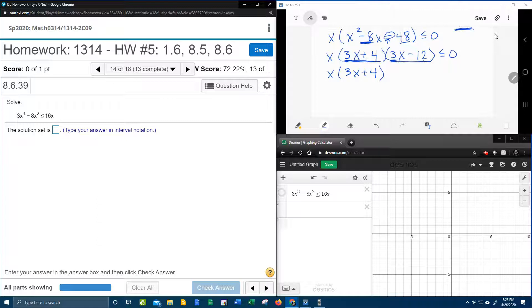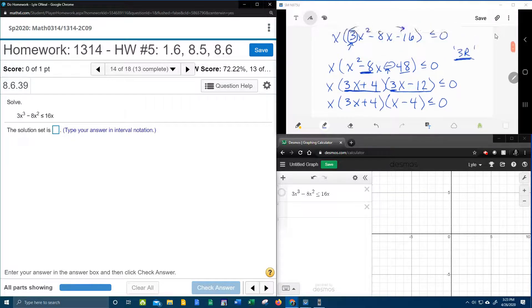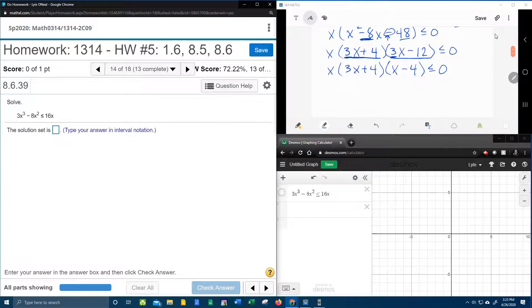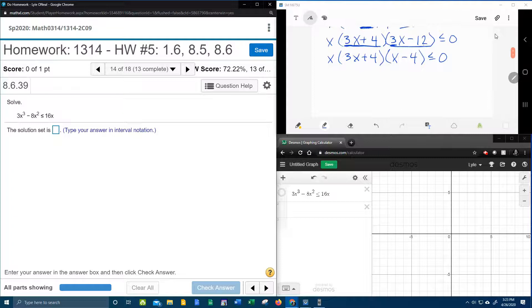Those will both divide by 3. So 3 divided by 3 is 1x. 12 divided by 3 is 4. And then if you look at what we've done here, we've taken this trinomial that we needed to factor using the 3R method. We now have it factored correctly. And so now we have 1, 2, 3 factors.